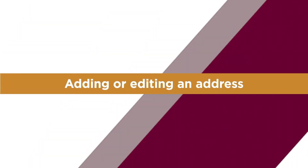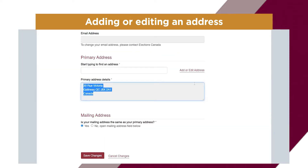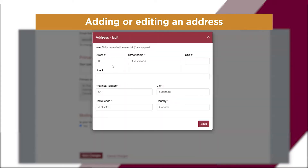When adding or editing an address, PESC uses an address service to find your address. If an address is incorrect, or if you live at a section, township, range, or meridian address, or if nothing appears in a given field, click on Add or Edit Address to enter the correct address.